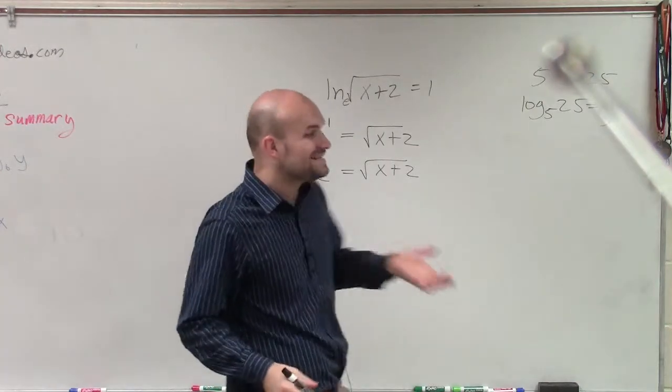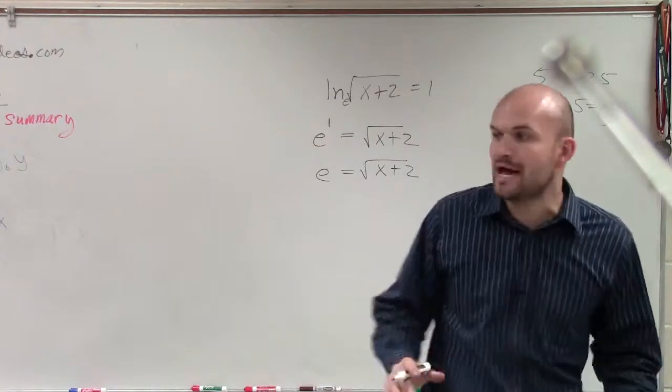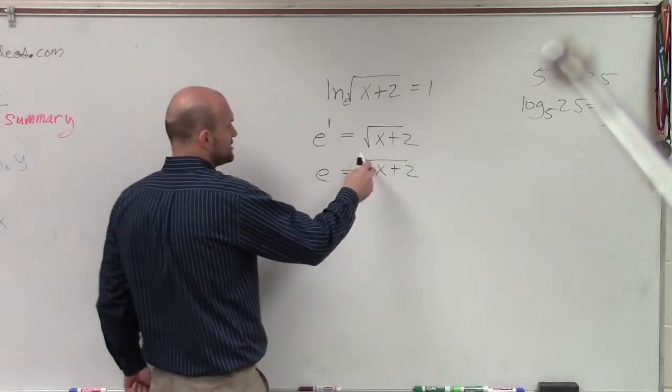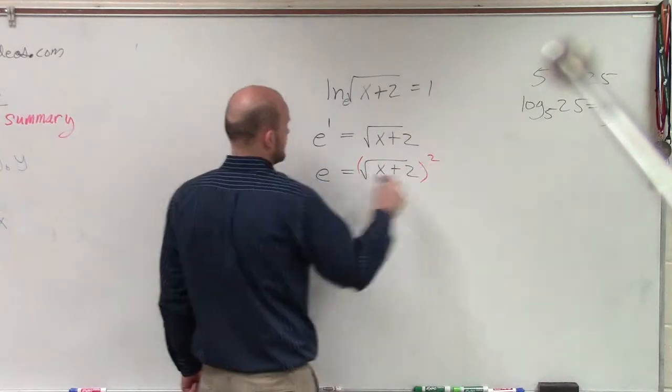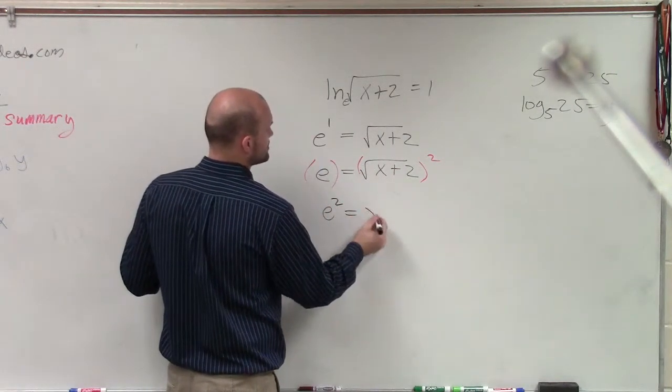Now, I need to solve for x. So right now, I have the square root of x plus 2. So to apply my inverse operations, to undo the square root operation, I need to square. So now I have e squared equals x plus 2.